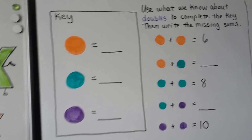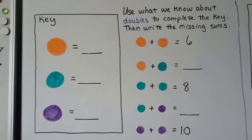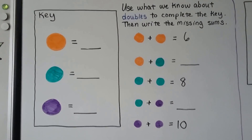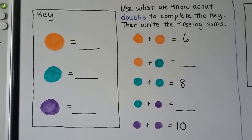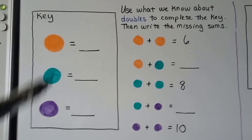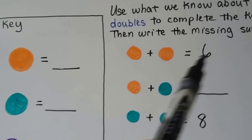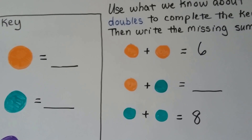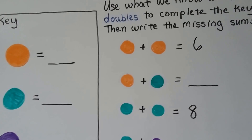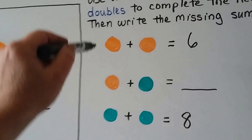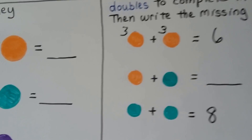This box — the rectangle — is called a key. We need to find the value of these colored circles. We can use what we know about doubles to complete the key. An orange one plus an orange one equals 6 — that's a doubles fact. Do you know what double fact equals 6? If you said 3 plus 3, you're right. 3 plus 3 is equal to 6, so each orange circle is equal to 3.